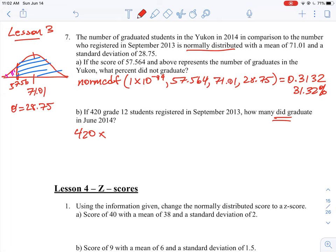The amount that did not graduate was 31.32%, so we're going to multiply by the fraction that did graduate. The amount that did graduate would be 100% minus 31.32%. Remember these are percentages, so we'll need to convert those into decimals.